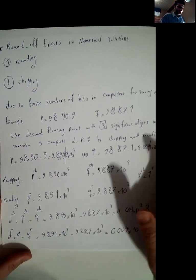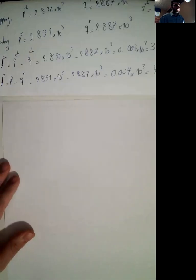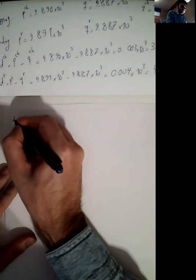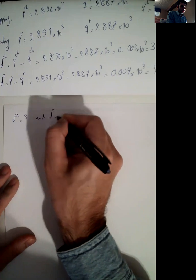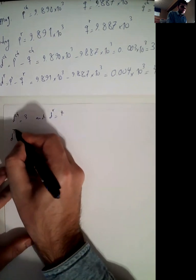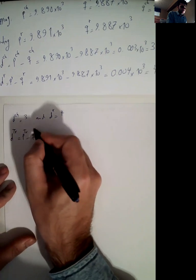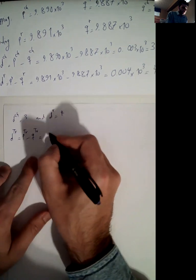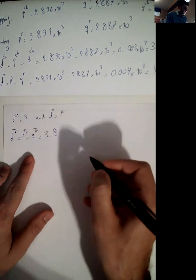Also, d rounding is p rounding minus q rounding, which is 9891 minus 9887. So you see that q chopping is equal to q rounding, 0.004 times 10 to the 3, which is 4. So we saw that d chopping is 3 and d rounding is 4. The question is what is the true value, which is p true minus q true?